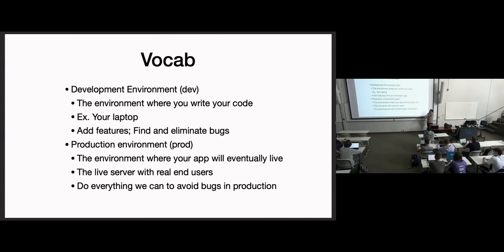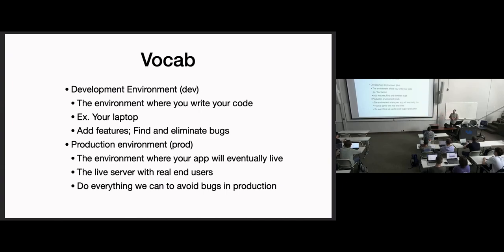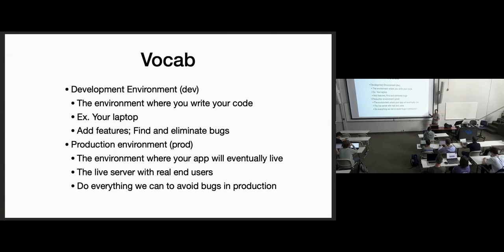Let's start with a little vocab. You may or may not have heard these terms before. Your development environment and your production environment are two very different environments. Development — your dev environment — is where you spend most of your time. This is where you're actually writing your code, adding features, pushing code to Git. This is typically our laptops or desktops. Production is where your app is going to eventually live — it's hosted on a server, live for the world to see. That's the environment where your app should be running 24/7. You shouldn't worry about things like downtime and bugs going live to users.